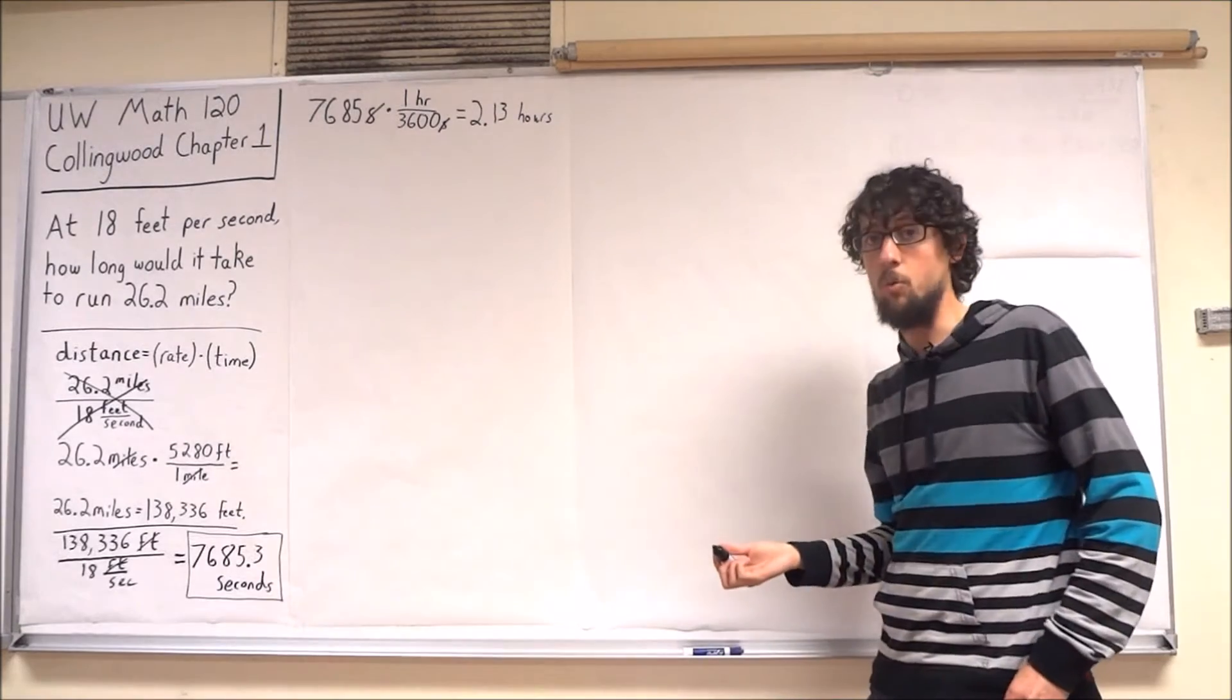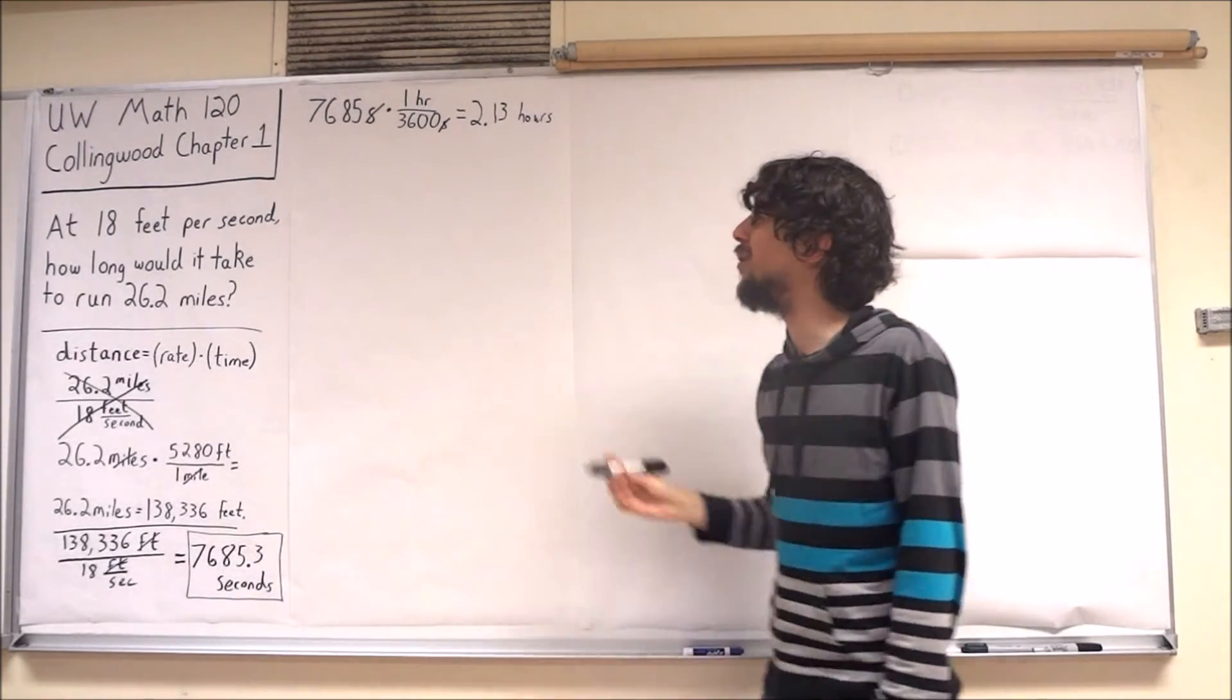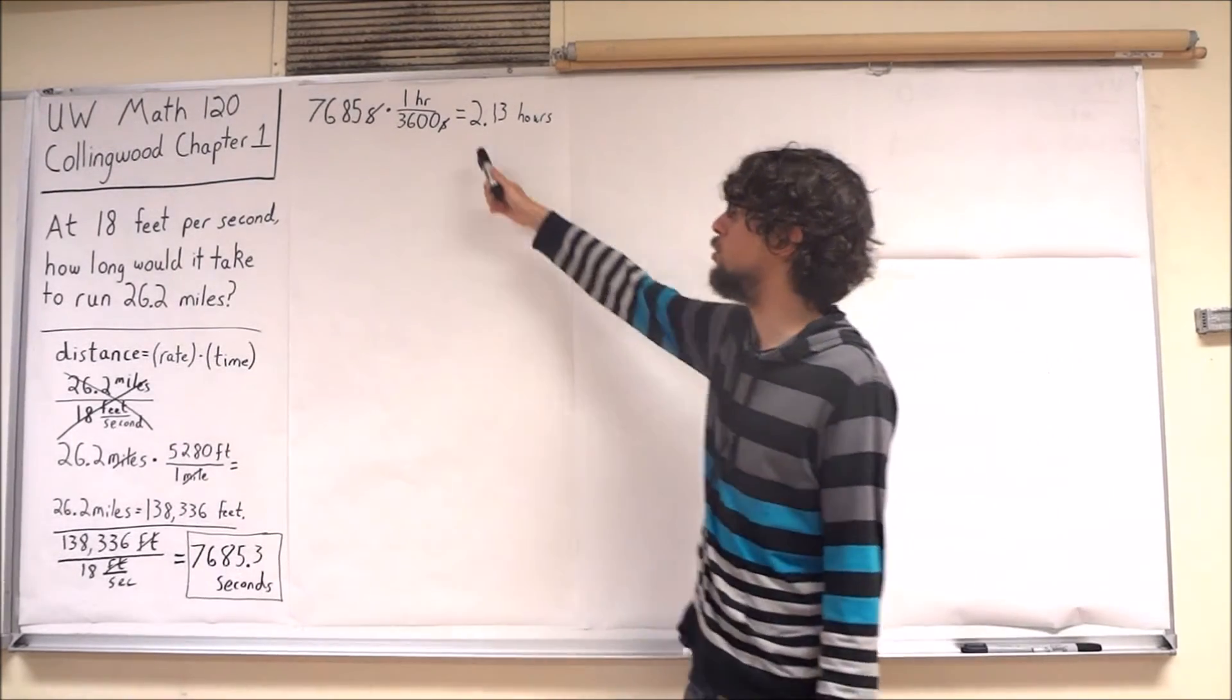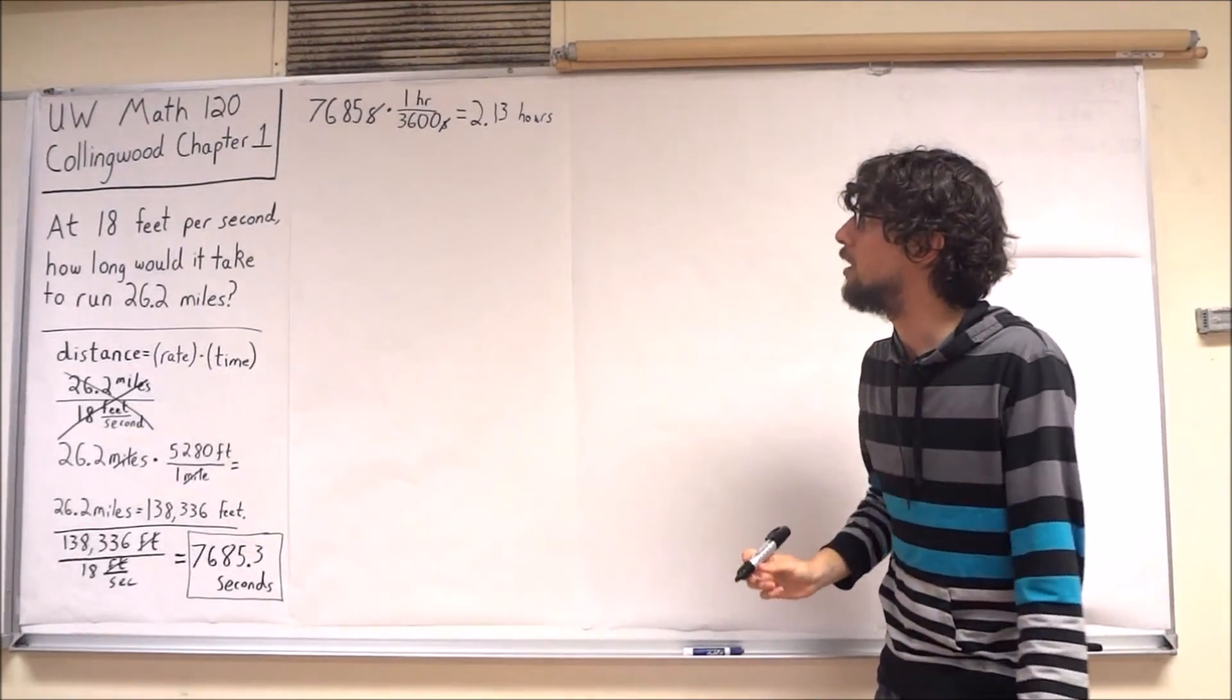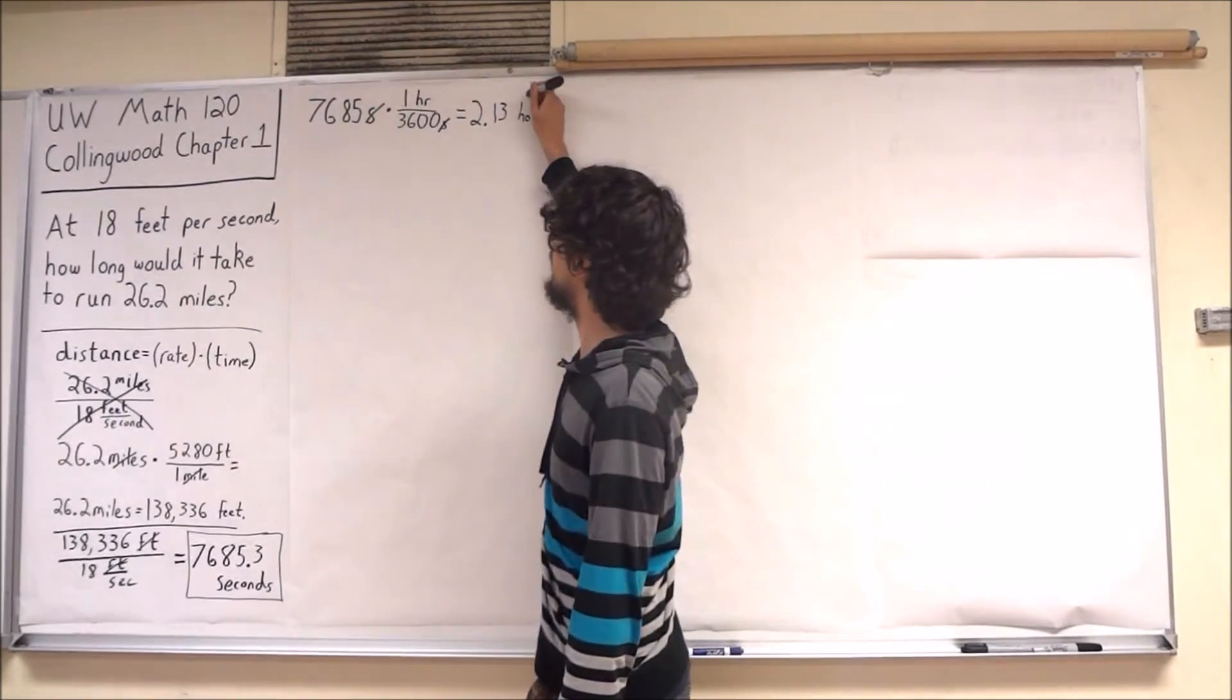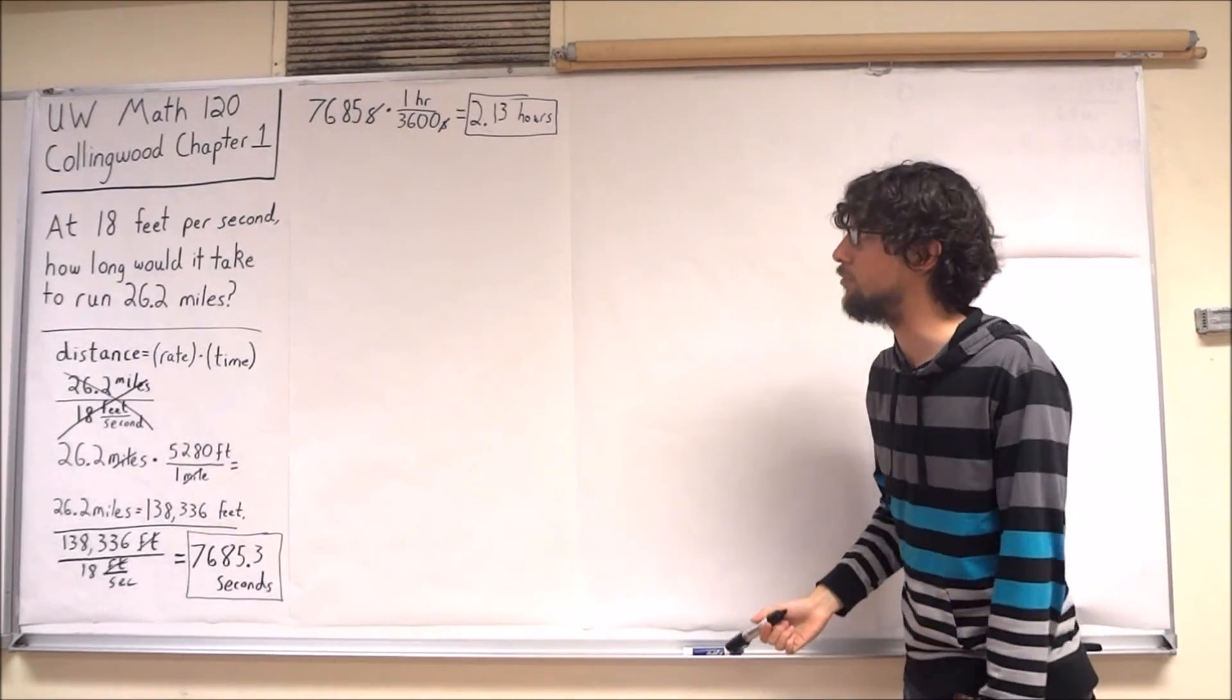Now, if I wanted to, I could grab this .13 hours and say, maybe I'd rather express that in terms of minutes. I could say that this is 2 hours, and I could apply a conversion factor to this .13 hours in order to convert it into minutes. I'm going to end this example here and say that it would take 2.13 hours to run this marathon at 18 feet per second.